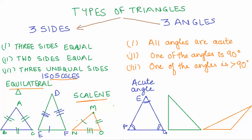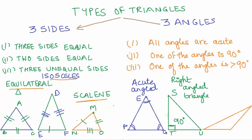The second case is where one of the angles is 90 degrees. Let us call this triangle STU, and angle T — or angle STU — is a right angle of 90 degrees. So we call this a right angled triangle. Now, is it possible to have a triangle with two 90-degree angles? Try to see if you can make such a triangle — it's a good thinking exercise.